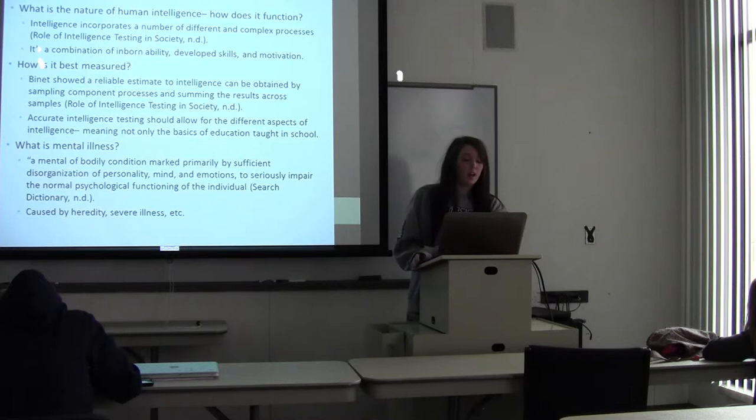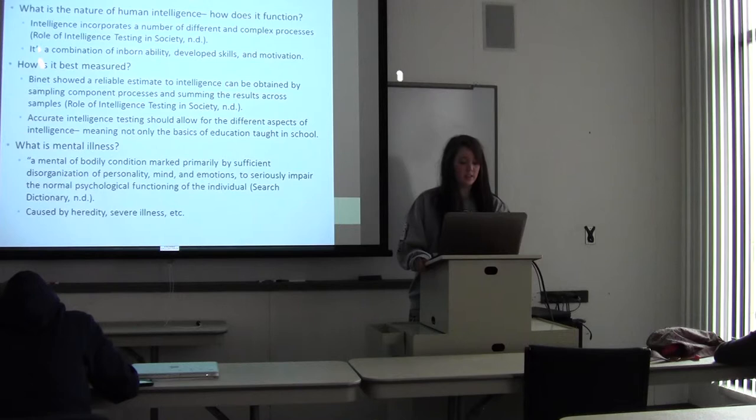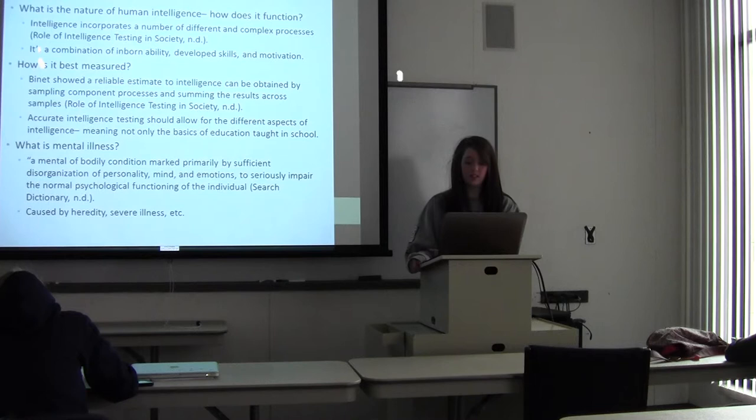What's the nature of human intelligence and how does it function? Intelligence incorporates a number of different and complex processes. It's a combination of ability that's inborn in you. You can develop it as you grow, you can practice it, it has a lot to do with your motivation. How's it best measured? Binet showed a reliable estimate to intelligence can be obtained by sampling component processes and summing the results across samples, which is just all of his intelligence testing that we talked about and today our ACT and SAT tests. But accurate intelligence testing should account for different kinds of intelligence. As we've all said, there's a lot more than just reading, writing, math. You have to know how to get out in the world and things like that.